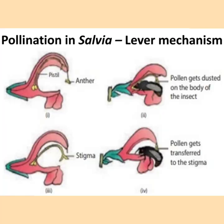Here you can see the flower on the left side where a bee enters to suck the nectar. The anther which is present in the upper part of the stamen strikes the back of the bee and pollen dust deposits on the body of the insect. When it reaches another flower, the stigma touches the pollen grains and the pollen grain is transferred to the stigma. This is the method of pollination in Salvia — the lever mechanism.